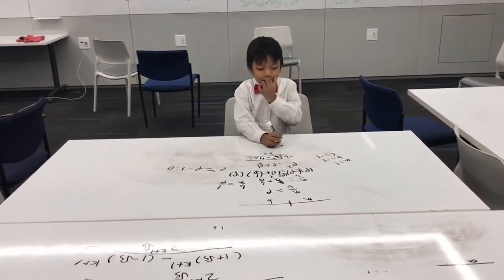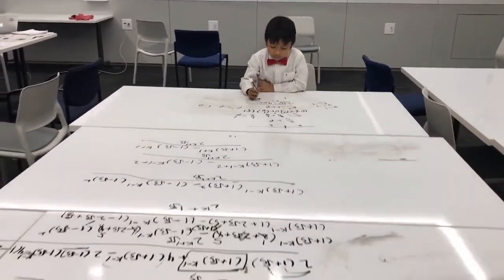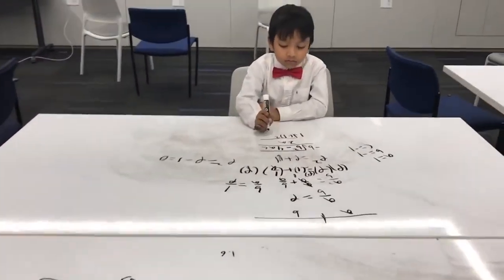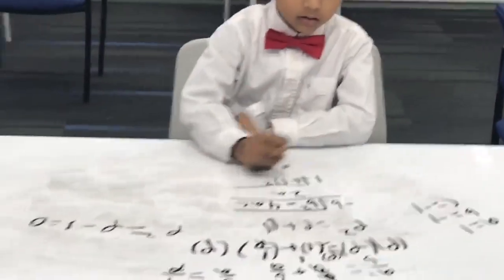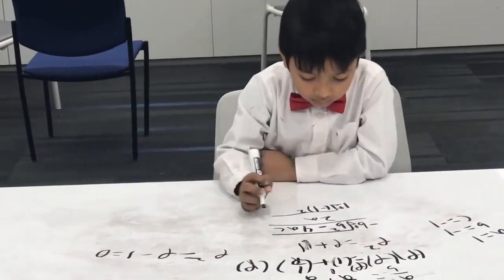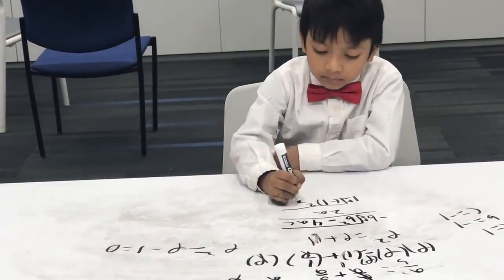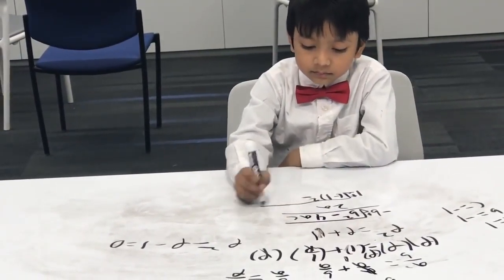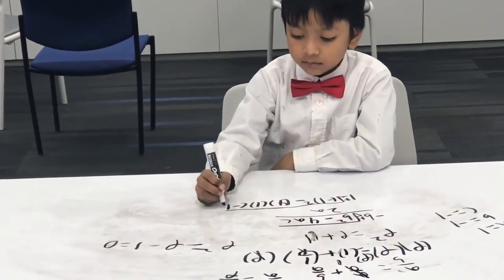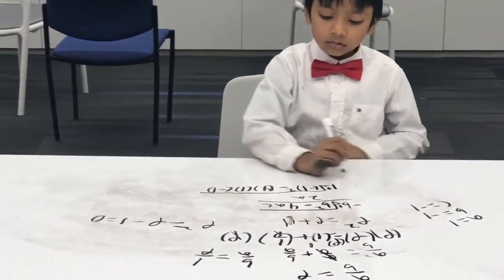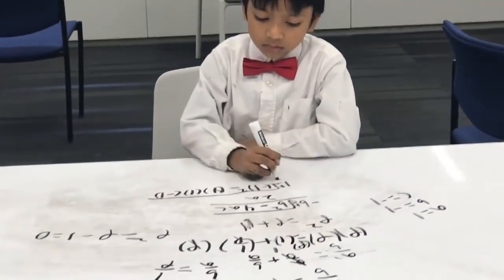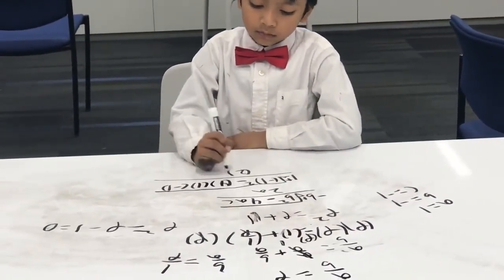1 minus 1 squared, 1 plus minus... minus 1 squared minus 4 times 1 times negative 1. So it's that simple. Over 2 times 1.